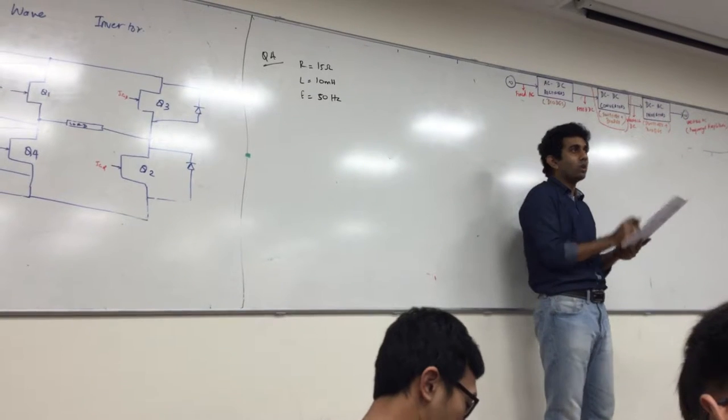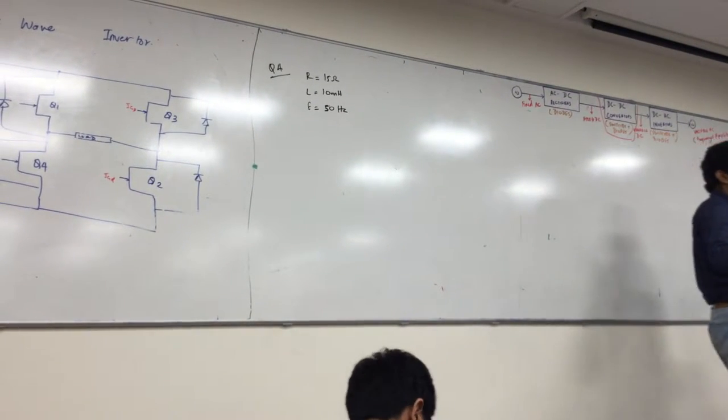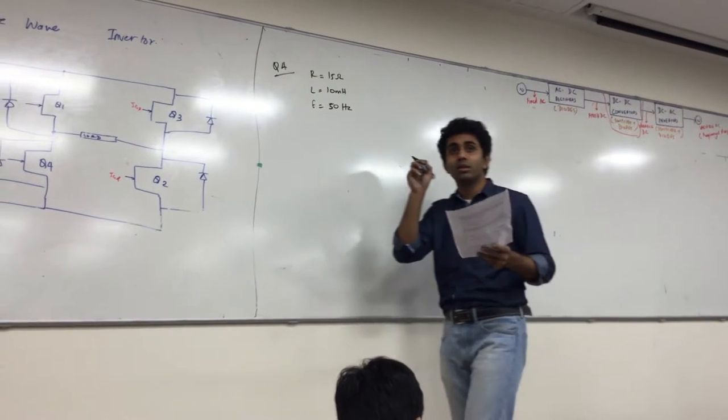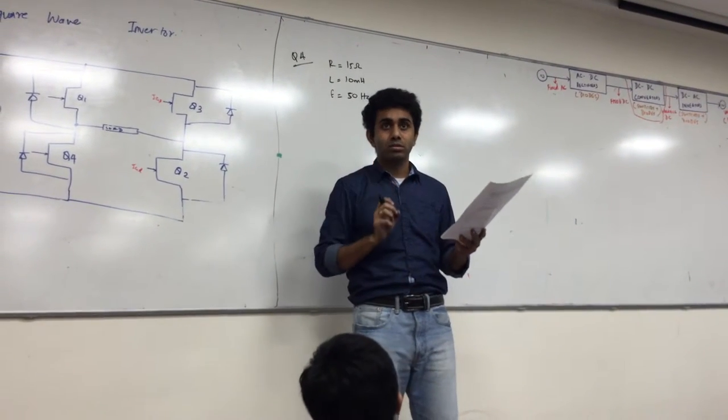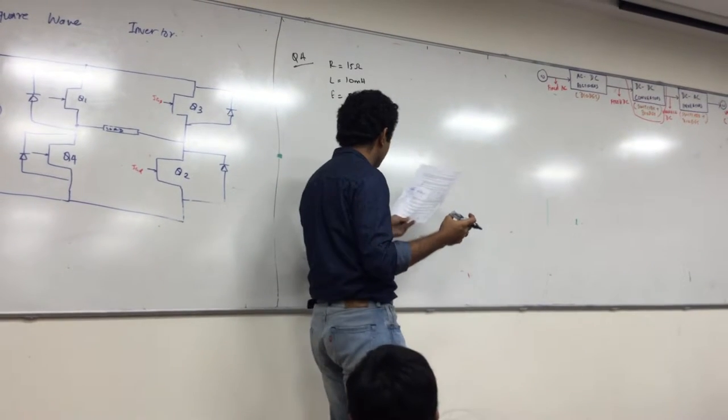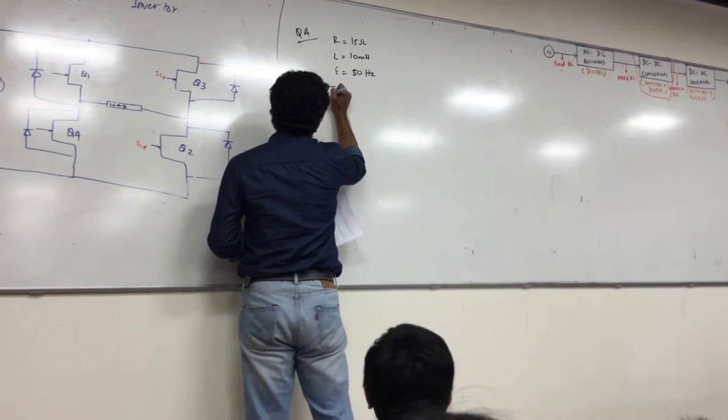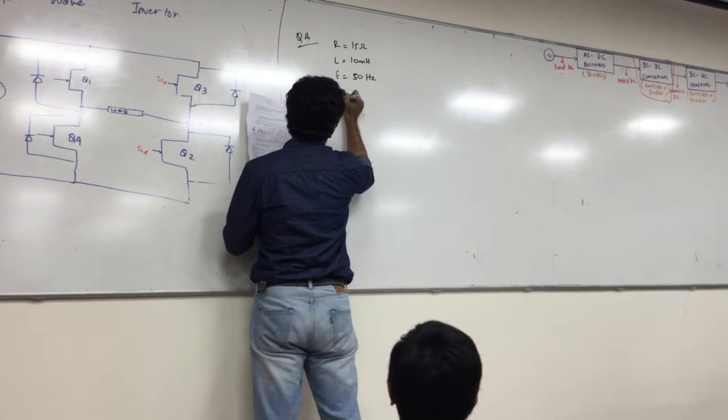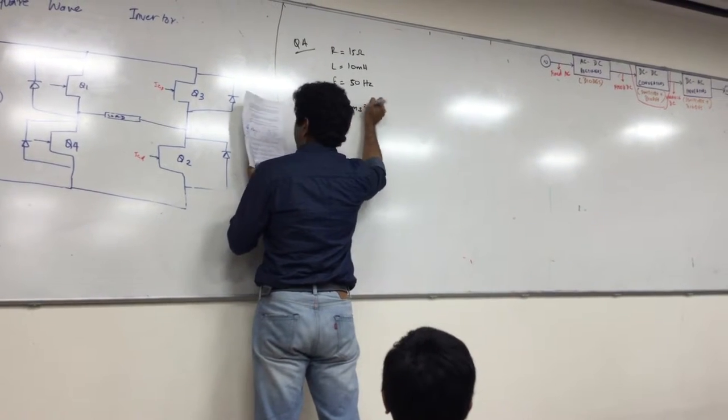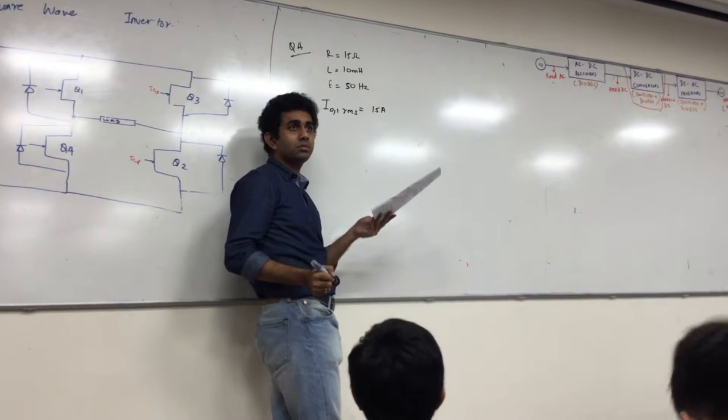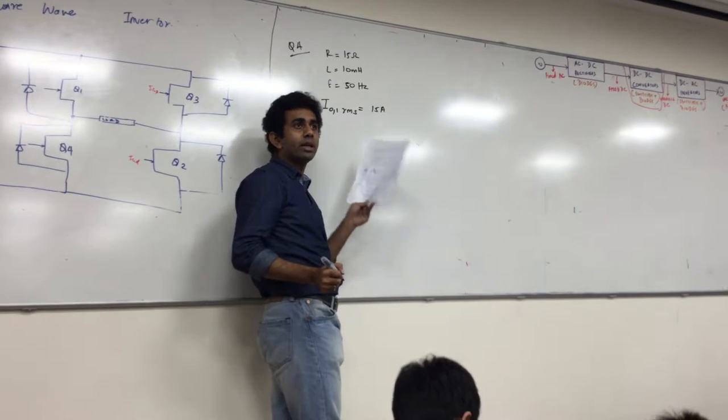So the question directly asks you about the RMS value of my fundamental current, fundamental component of my current, which means I know I01 RMS is equal to 15 amperes. How do I get this current?